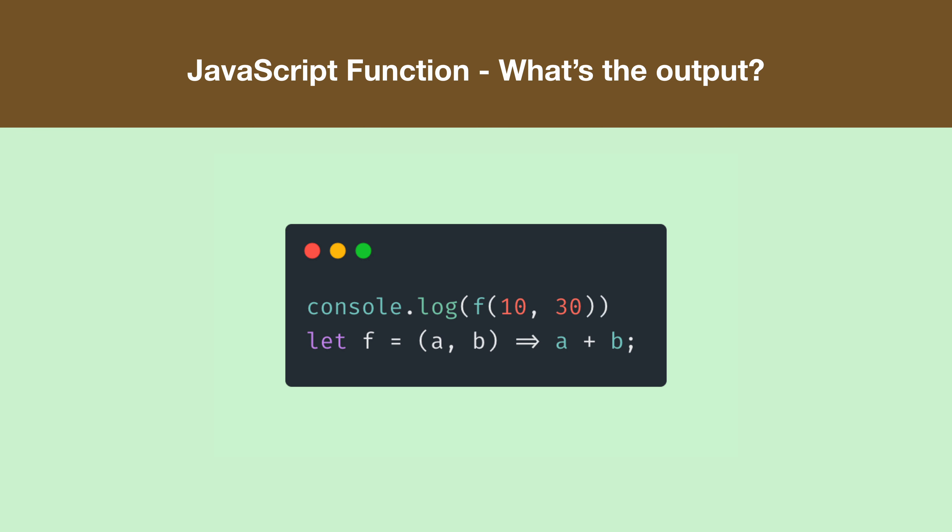In this question, we have a console.log as the first statement calling f with 10 and 30 as arguments. The next line declares an arrow function which adds the parameters together.